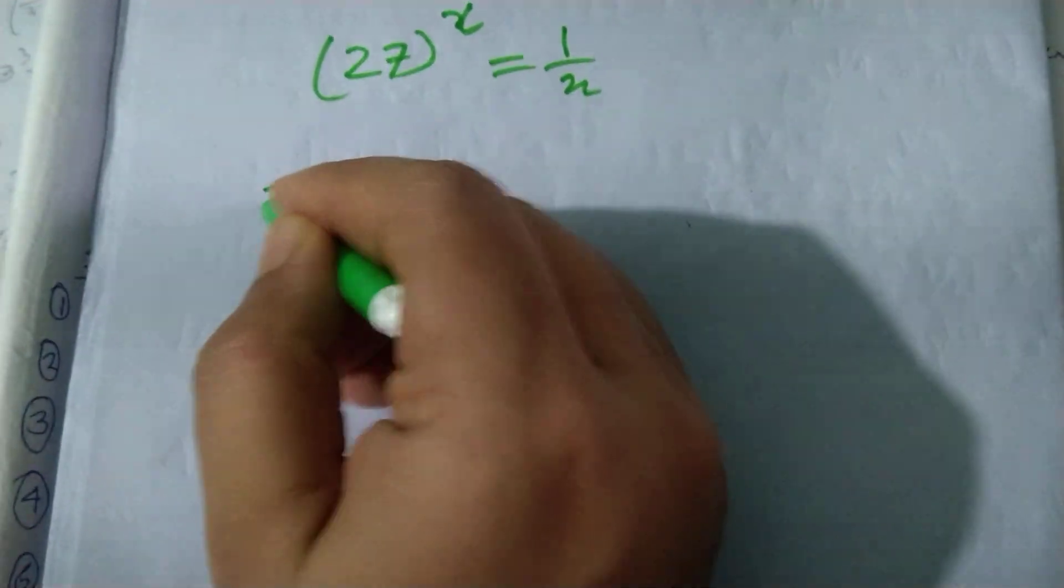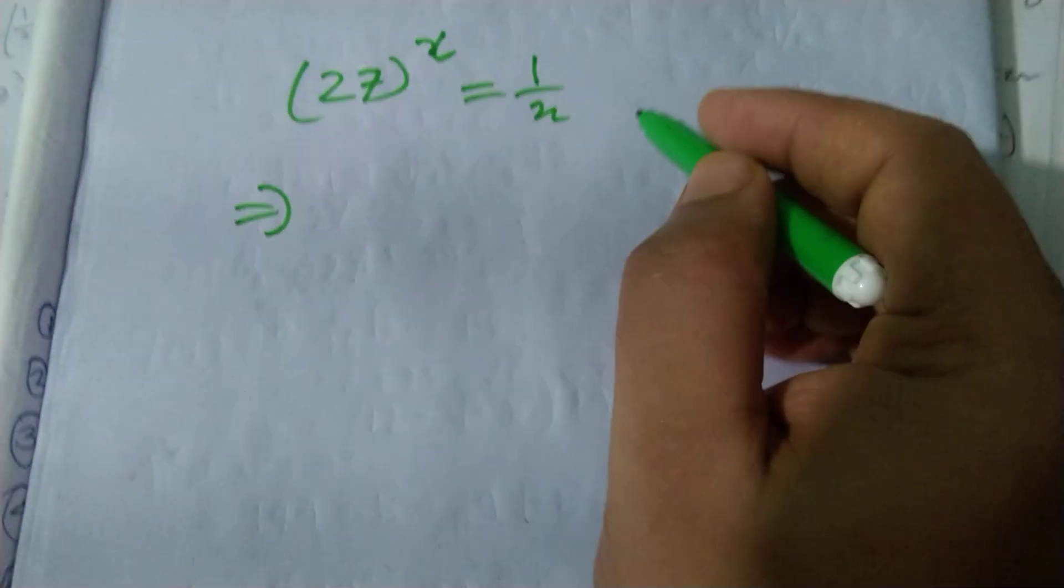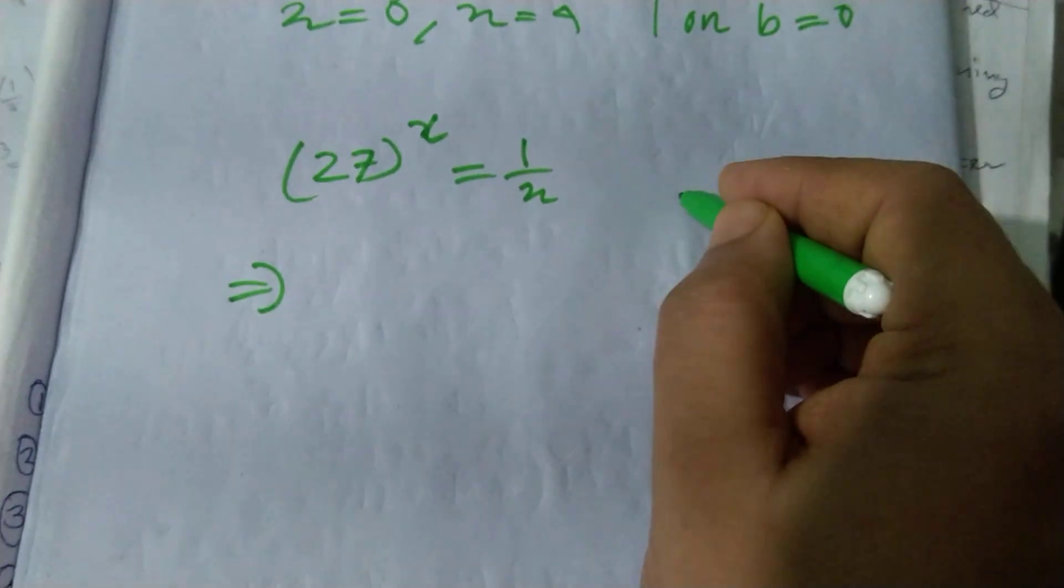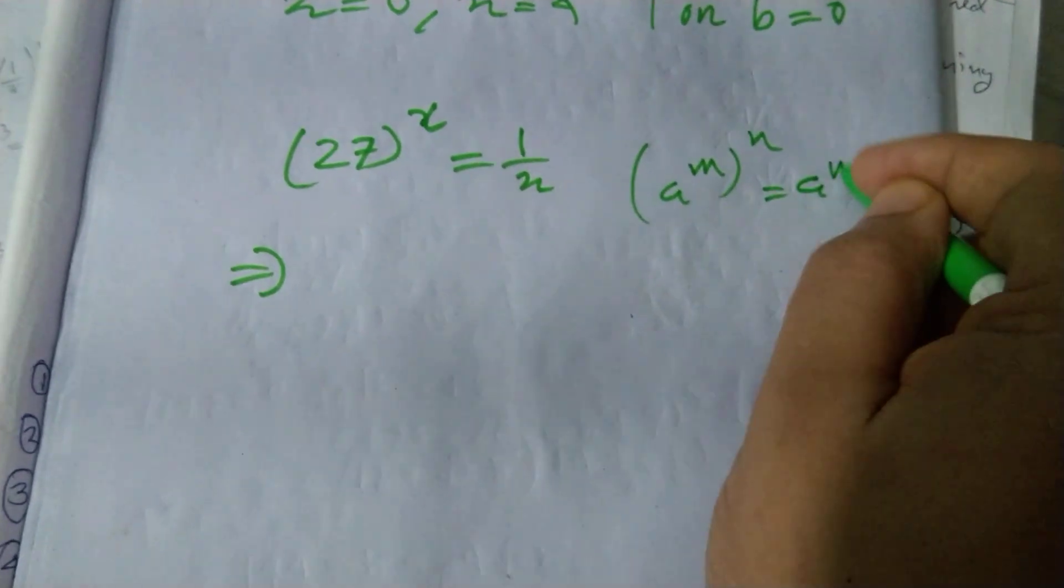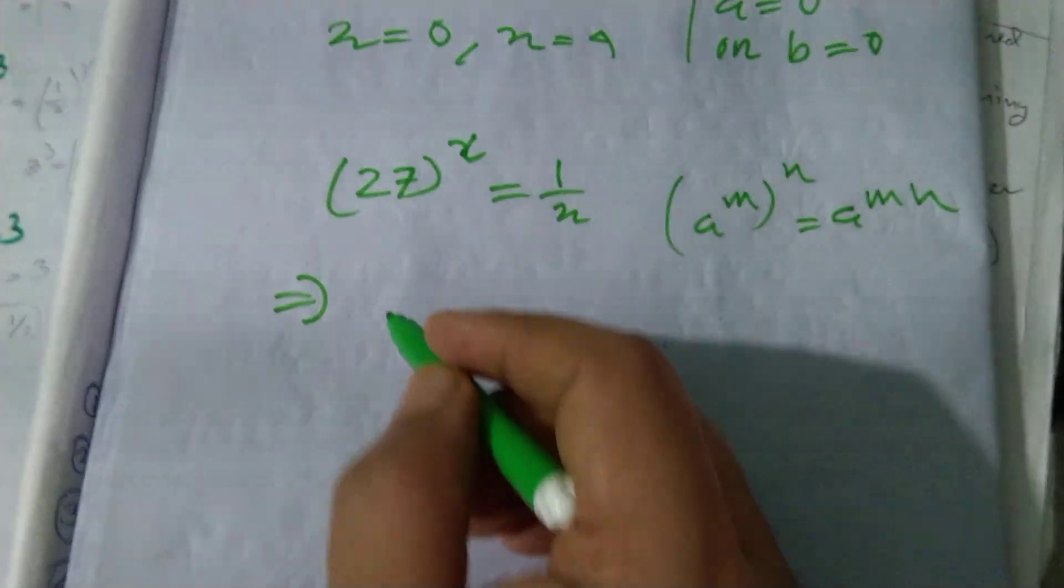Apply the exponential rule. Rule: a to the power m to the power n is equal to a to the power mn. I will apply this formula.